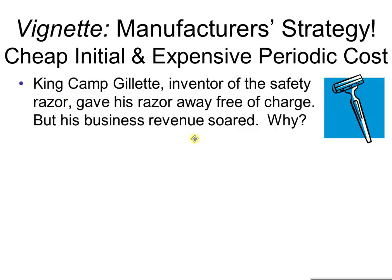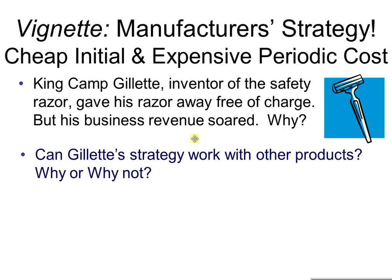Let's take a look at this little case. It's a common manufacturer's strategy to have cheap initial costs and expensive periodic costs. For example, King Cam Gillette, inventor of the safety razor, gave his razor away free of charge, but his business revenue soared. Why? Can Gillette's strategy work with other products? Why or why not?